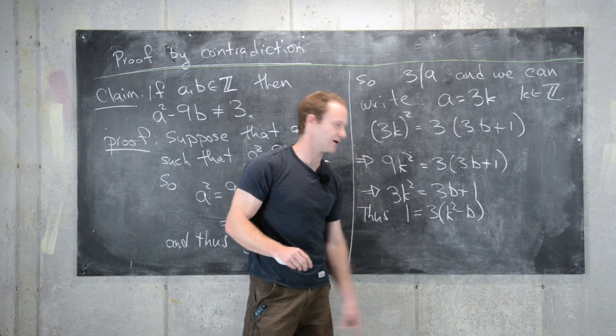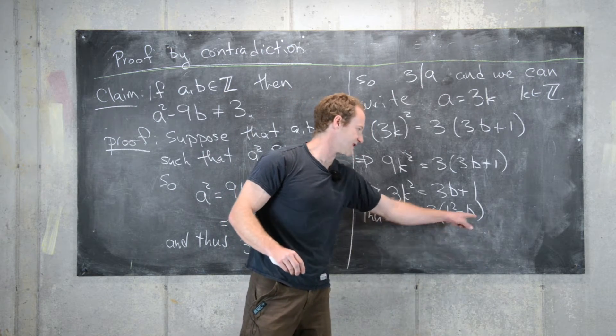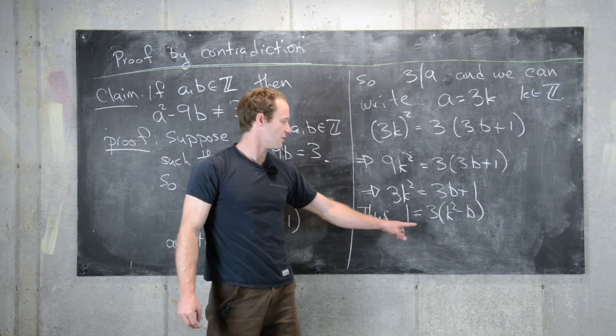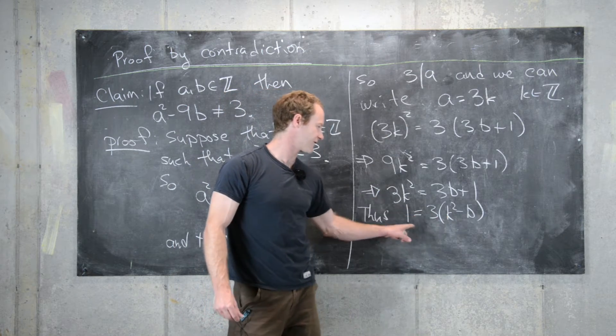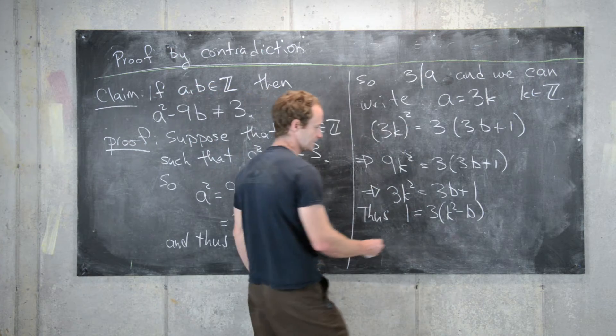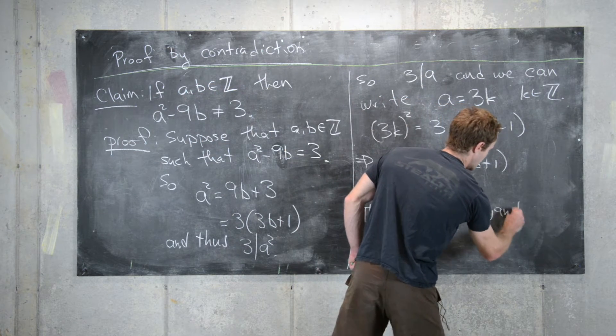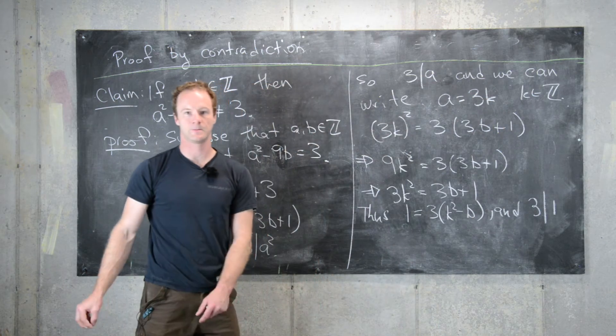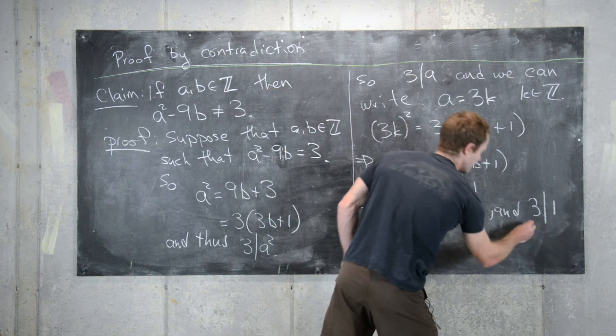Recall that k squared and b are integers, so this is an integer. It can't be 0 because the left-hand side is non-zero. But we have an integer multiple of 3 equal to 1, which means we could write 3 divides 1. But that's a contradiction.